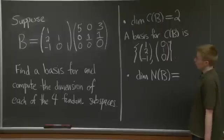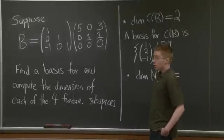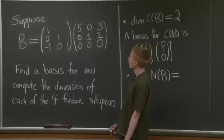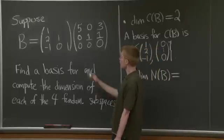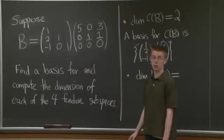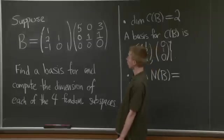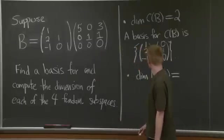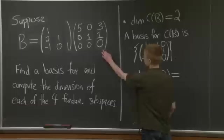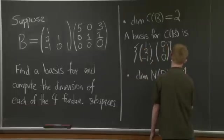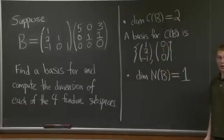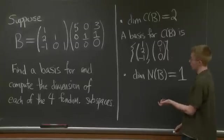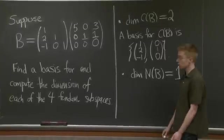Well, the dimension of the null space is always the number of columns minus the number of pivots. It's the number of free variables. So here, that's just 1. Good.